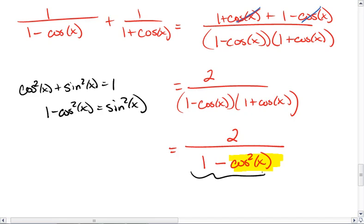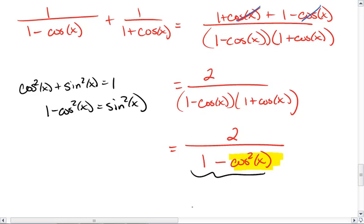Thus, we can substitute out this entire denominator for sine squared. So we get 2 over sine squared x.